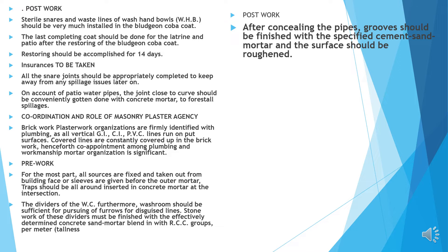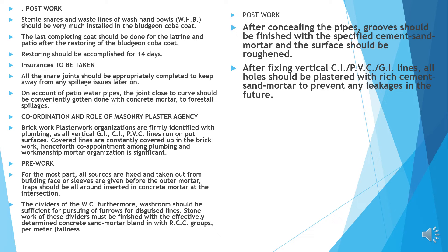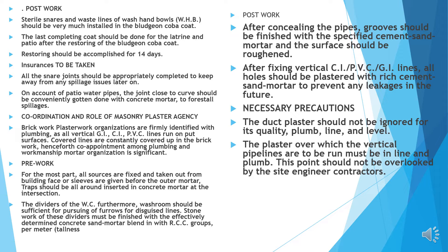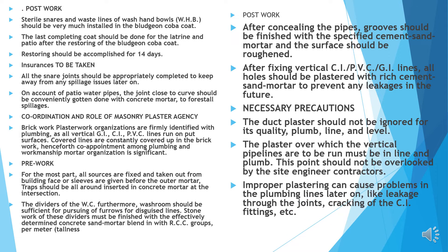Post-work: after concealing the pipes, grooves should be finished with specified cement sand mortar and the surface should be roughened. After fixing vertical lines, all holes should be plastered with rich cement sand mortar to prevent any leakages. Necessary precautions: the duct plaster should not be ignored for quality, plumb, line and level. The plaster over which vertical pipelines are to be run must be in line and plumb. Improper plastering can cause problems in the plumbing lines later on — like leakages through joints, cracking of CI fittings, etc. Hence, duct plaster should be done in perfect plumb, line and level.